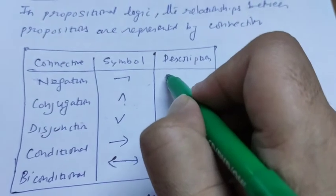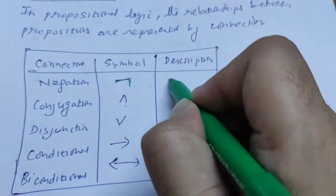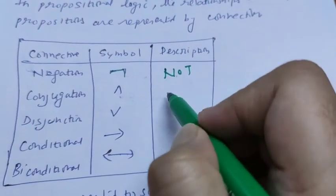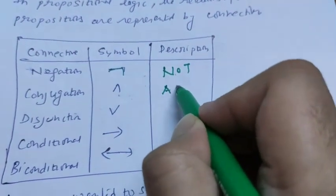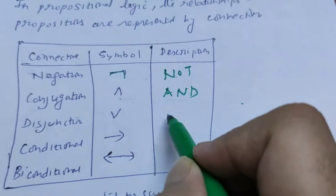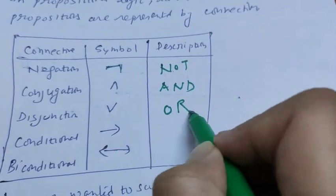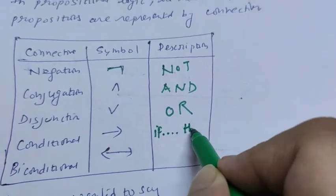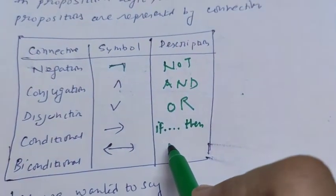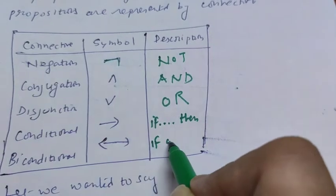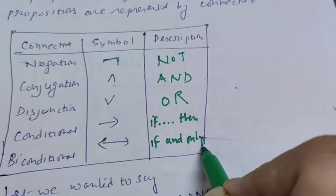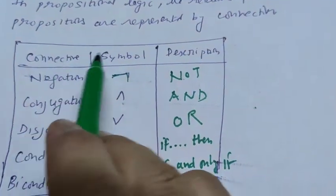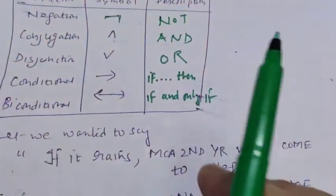For example, in negation we write the sign is this and the description is not. In conjunction we write it as and. For disjunction we write as or. For conditional, in programming you have done this, if then. For biconditional, if and only if. These are the three columns: connective, symbol, and description.